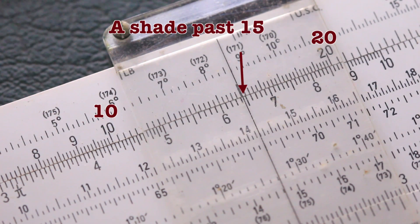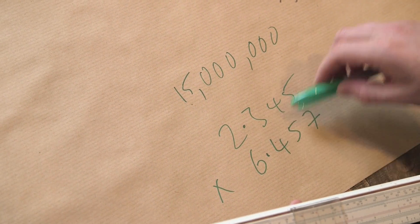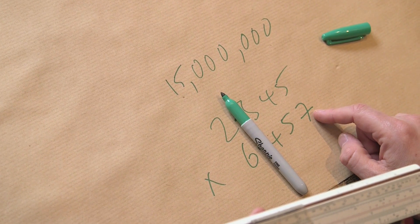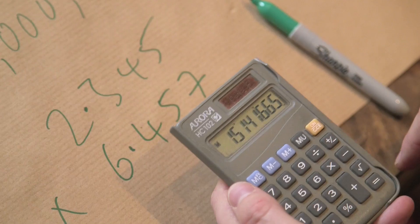Okay, so that would tell me, literally within a few seconds, that 2,345 times 6,457 is fifteen million, and why don't we just check that?